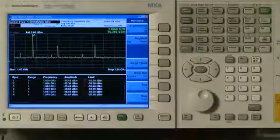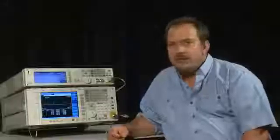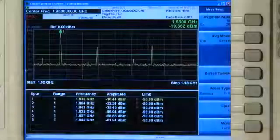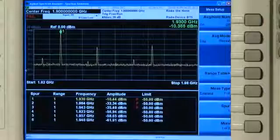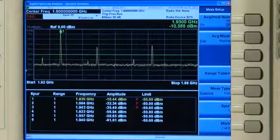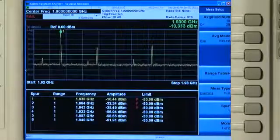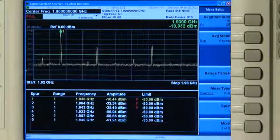But with Agilent's PowerSuite, the job becomes incredibly simple with just a few button presses. The spurious emissions measurement automatically lists and measures the amplitude and frequency of up to 200 spurs in up to 20 separate frequency ranges that you specify.